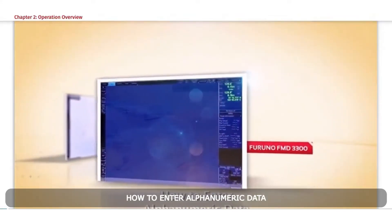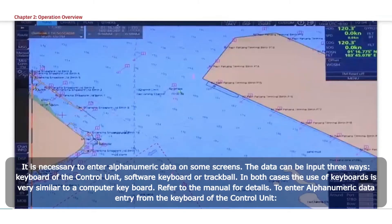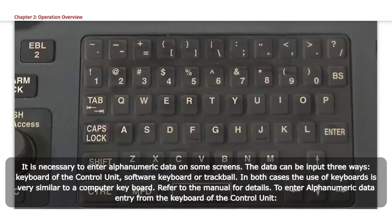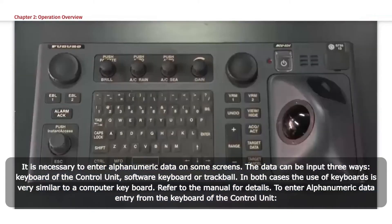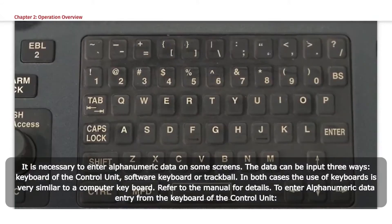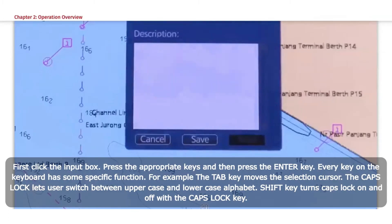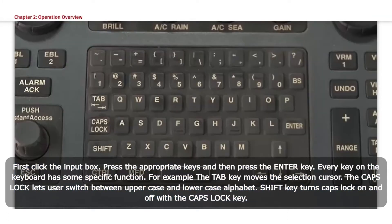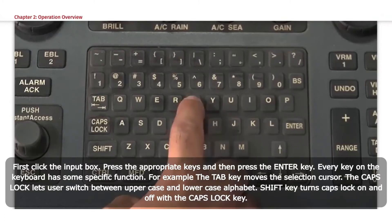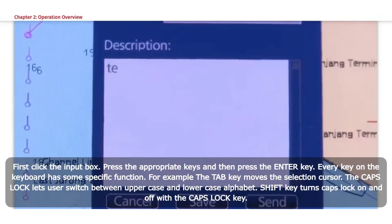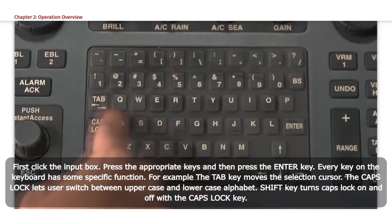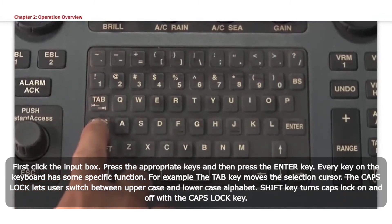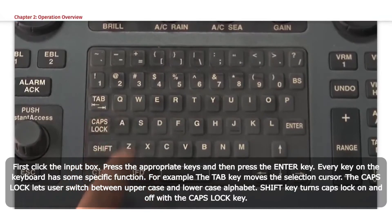How to enter alphanumeric data. It is necessary to enter alphanumeric data on some screens. The data can be input three ways: keyboard of the control unit, software keyboard, or trackball. To enter alphanumeric data from the keyboard of the control unit, click the input box, press the appropriate keys, and then press the Enter key. Every key on the keyboard has a specific function. For example, the Tab key moves the selection cursor. The Caps Lock lets users switch between uppercase and lowercase alphabet.